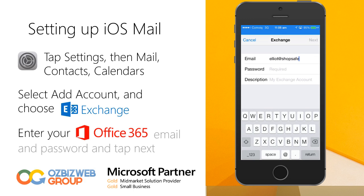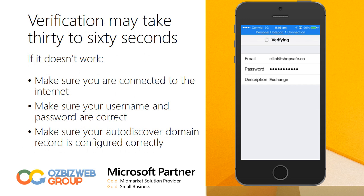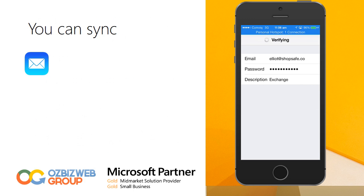If you're not sure of your email address and your password, contact your administrator and they'll be able to provide you with that information. So I've put in my password here, and it's going to verify with the Office 365 servers that my email and password is correct and bring down all those details. If you find that this doesn't work and you're the Office 365 administrator, just make sure that the auto-discover information is configured correctly on your domain. This verification takes a little while, and then once it's finished, it's going to let me know that the connection's been successful and let me sync the different aspects of my Office 365 Exchange Online connection.